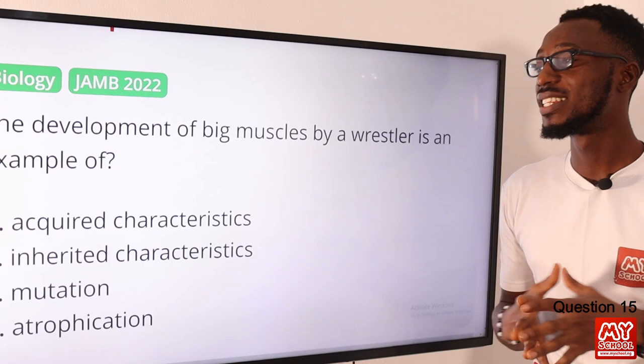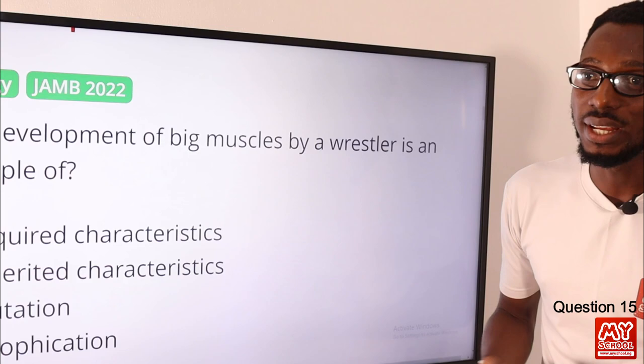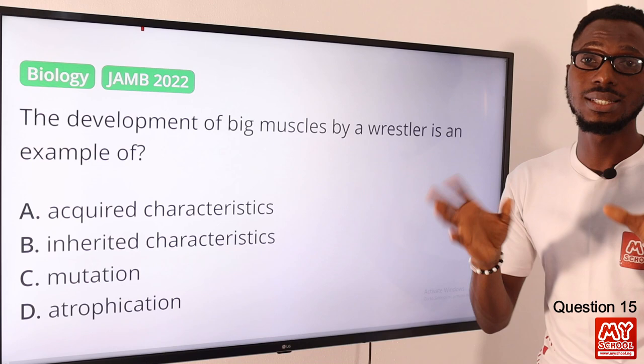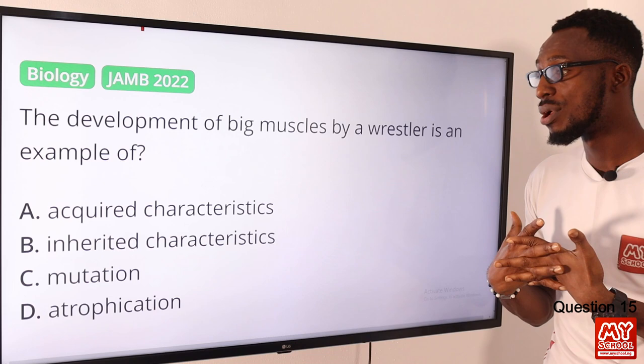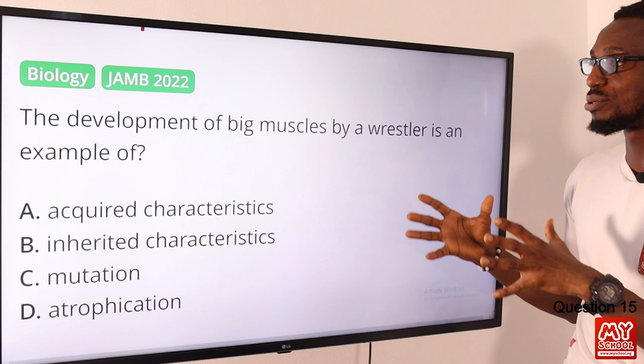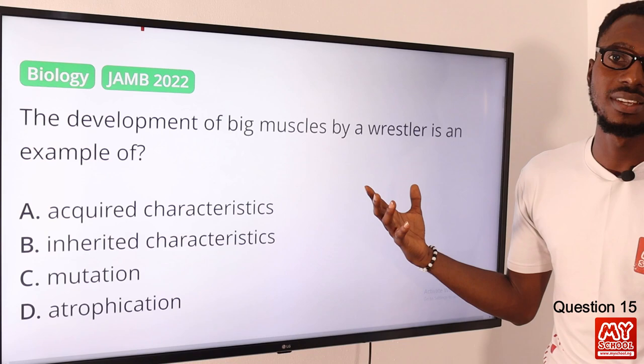Question fifteen: the development of big muscles by a wrestler is an example of what? This is acquired in the course of use — through lifting heavy weights and aerobic exercises. It is not inherited. Inherited characteristics include height and skin color. Mutation is a change in DNA; atrophy refers to loss or decrease in size of a body part. This is an acquired characteristic. Option A is correct.